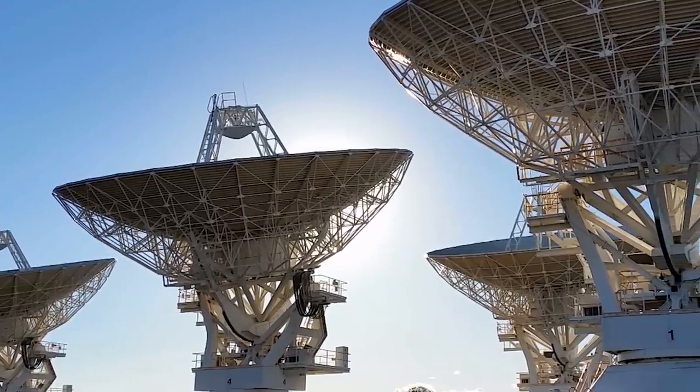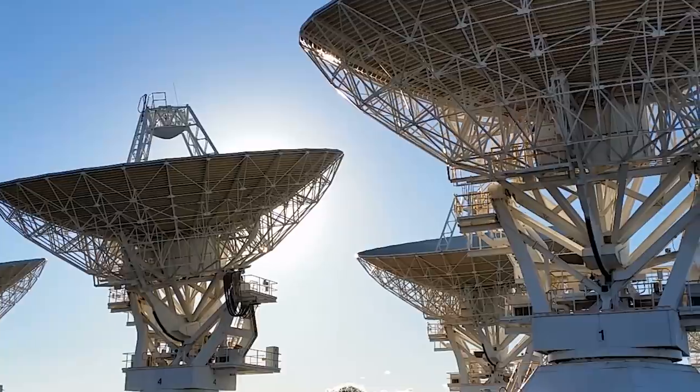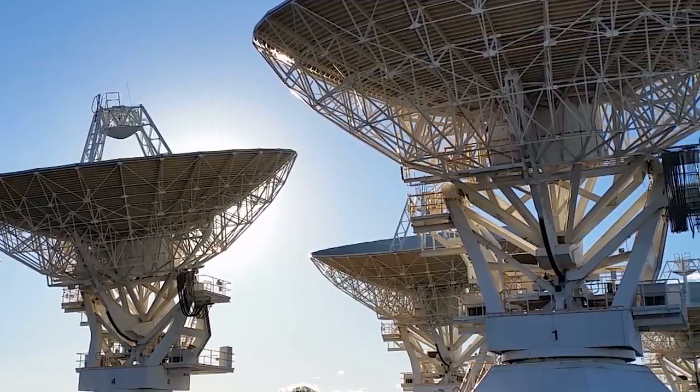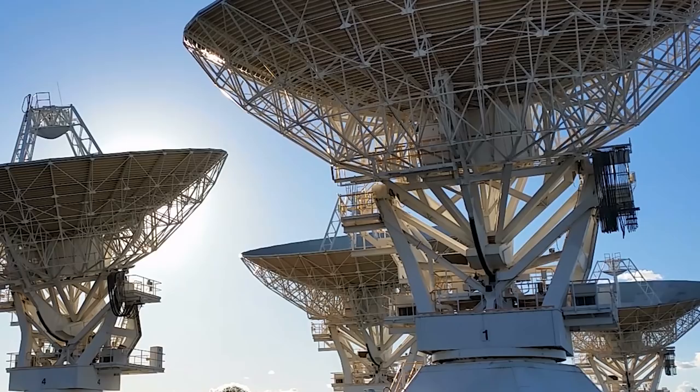The largest antennae at each DSN site is 70 meters, 230 feet in diameter, and one is actually being built right now to be even bigger than that.